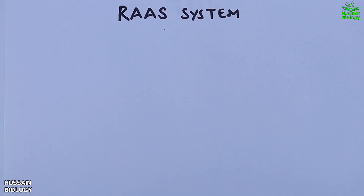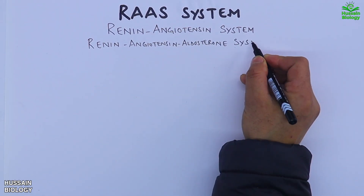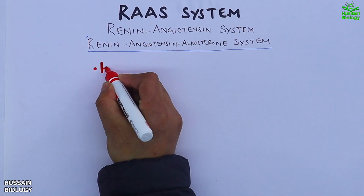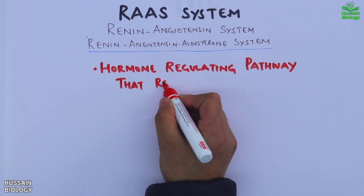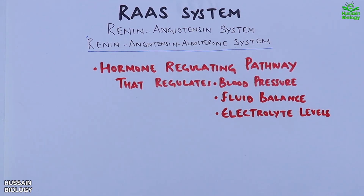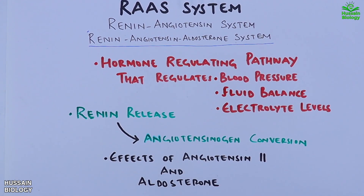In this video we are going to discuss the RAS system, which is the renin-angiotensin system or renin-angiotensin-aldosterone system. It's a hormone regulating pathway that regulates blood pressure, fluid balance and electrolyte levels. The RAS system has two basic steps: renin release and angiotensinogen conversion. Then we see the effects of angiotensin 2 and aldosterone. Now let's get to the detailed mechanism.